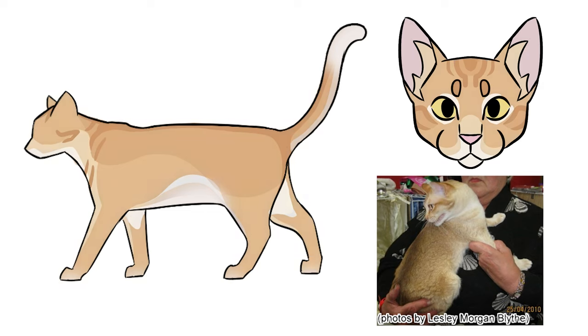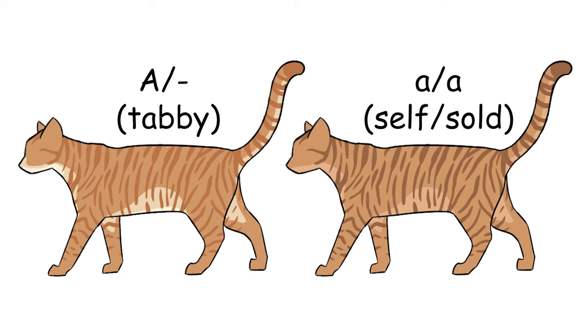Carnelian acts like amber, but instead of the cat's pigments getting replaced as they grow up, the cat's pigments are replaced during development in the womb, so the cat is born already orange.